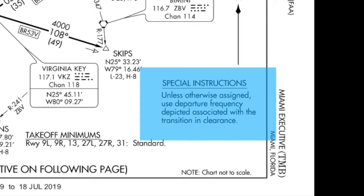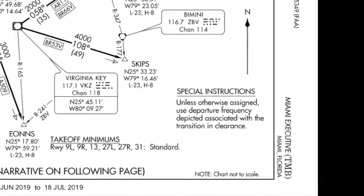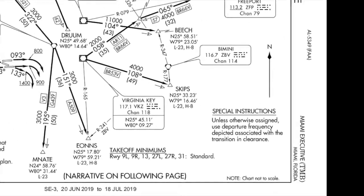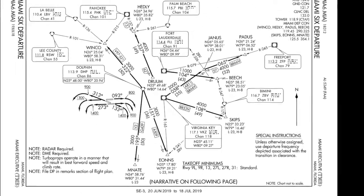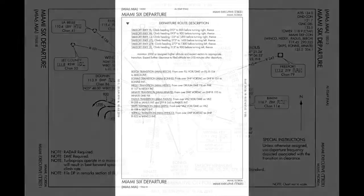It'll say: unless otherwise assigned, use the departure frequency depicted associated with the transition in your clearance — basically just saying do what it says on the chart. We have the graphical chart here, but we would have to look at the second page, the textual chart, to get a better idea of what we're going to be doing.